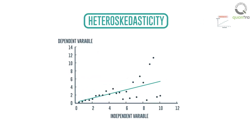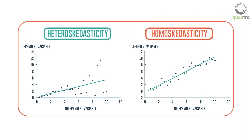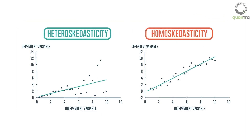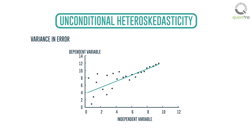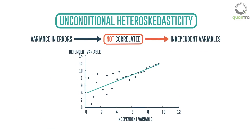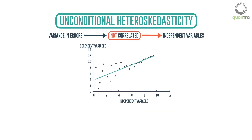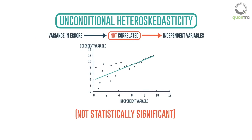However, in heteroscedasticity, errors are not constant. You may look at the difference between the two graphs. Unconditional heteroscedasticity occurs when the variance in errors is not correlated with independent variables; in other words, error variance does not systematically increase or decrease with the changes in the values of independent variables. Though this violates the assumption, it is not statistically significant and causes no major problems while forecasting variables using regression analysis.